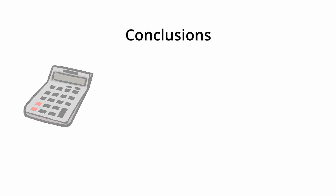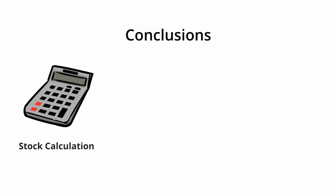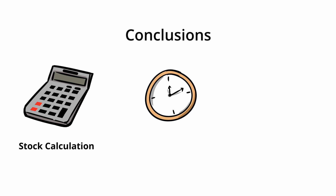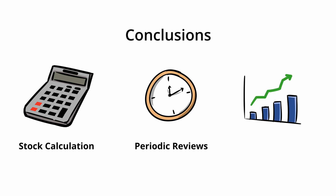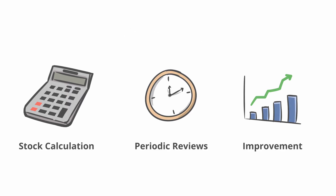Conclusions. The calculation of cycle stock, buffer stock, and safety stock is a dynamic process that requires periodic reviews. Although the calculations are simple, constant management of data and stock levels is crucial. Moreover, it's clear that improvements in maintenance, quality, and reducing lead time can reduce inventory without compromising customer satisfaction.